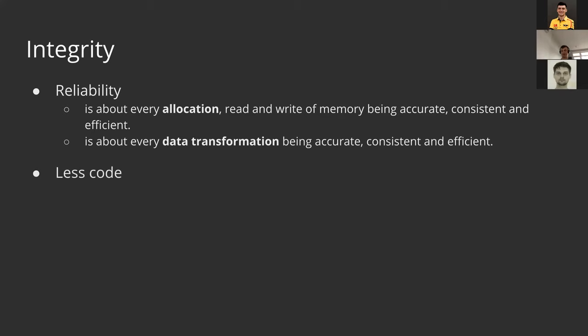Why write less code? Statistics show that for every 1,000 lines of code there are 15 to 50 errors — meaning roughly every 20 lines contains a bug. When we write less code, we produce fewer bugs — it's simple math. Integrity also depends on error handling, which I keep repeating because it's really very important.